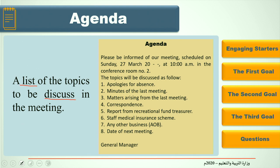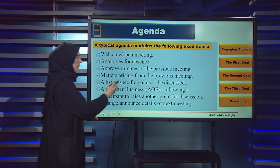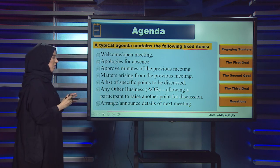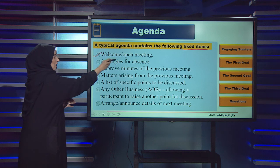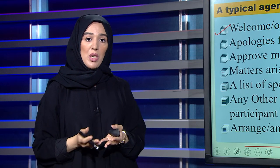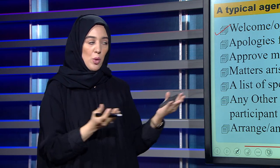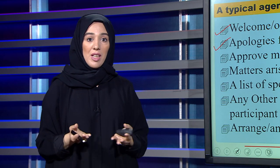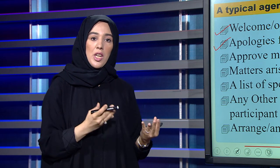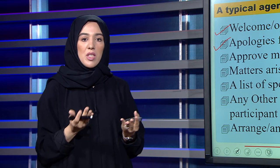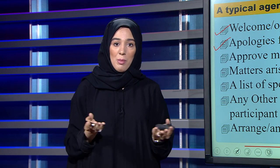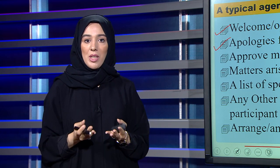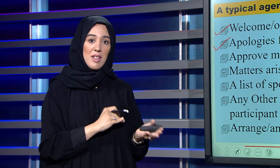This is a sample of the agenda. Here are the fixed items — items that appear in every agenda. First, we welcome or open the meeting: the chairman welcomes the members and starts the meeting. Then, apologies for absence: if any member couldn't attend for any reason, the chairman apologies on their behalf. For example, Mr. Mohamed couldn't attend because he had another meeting.